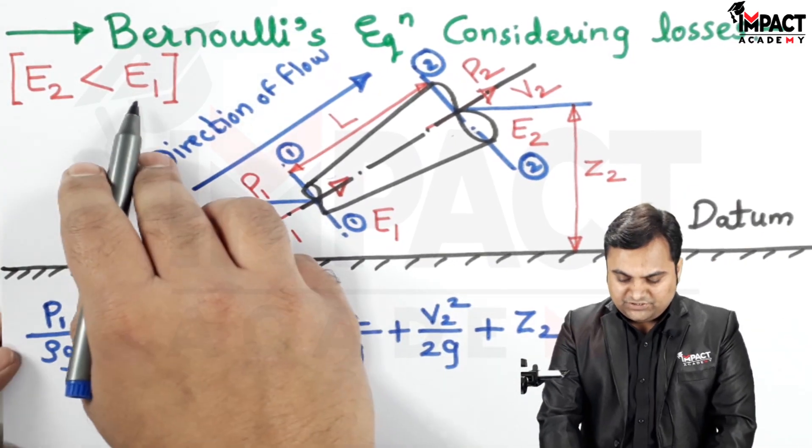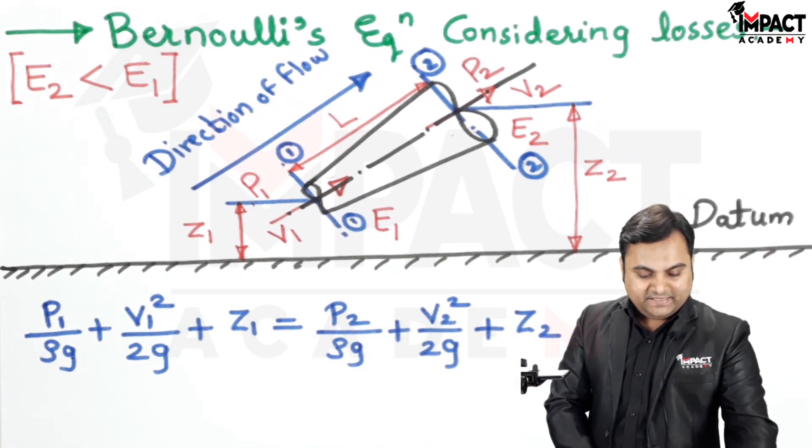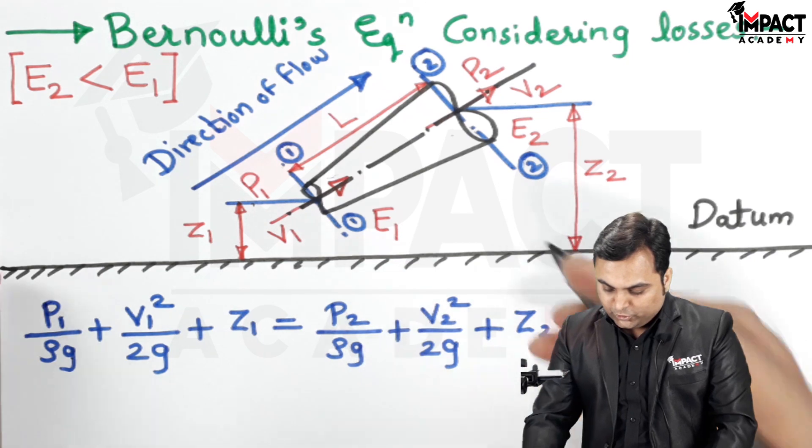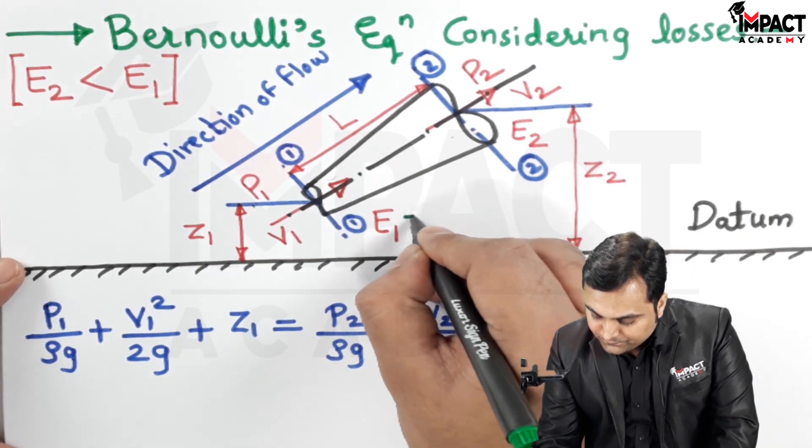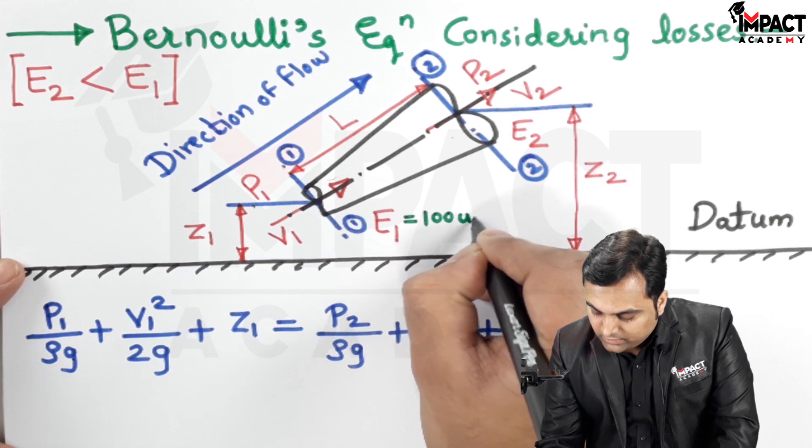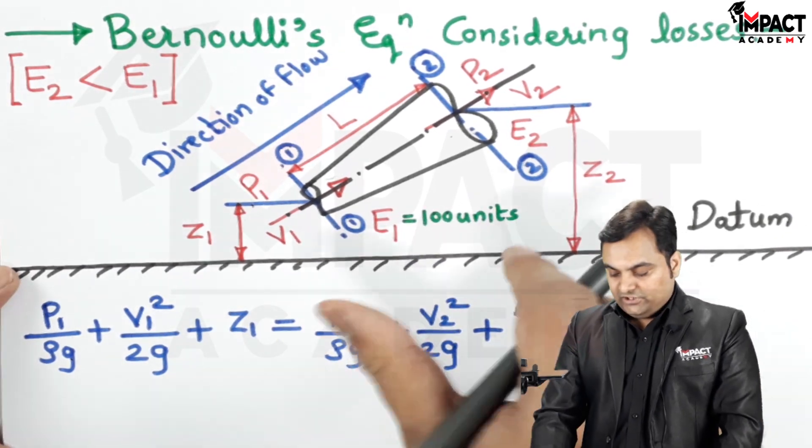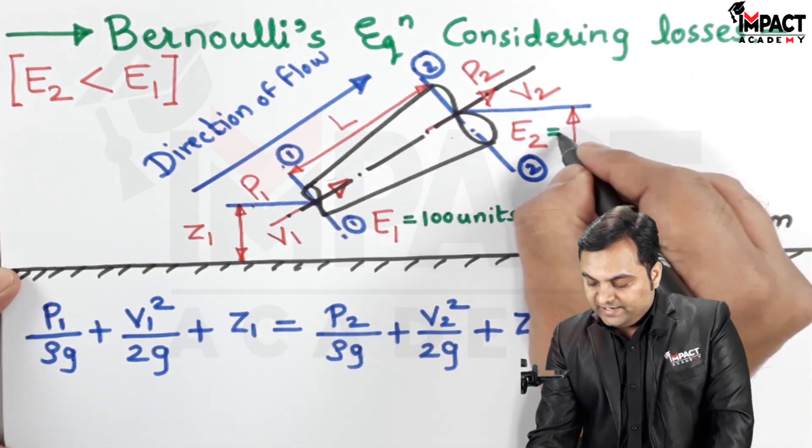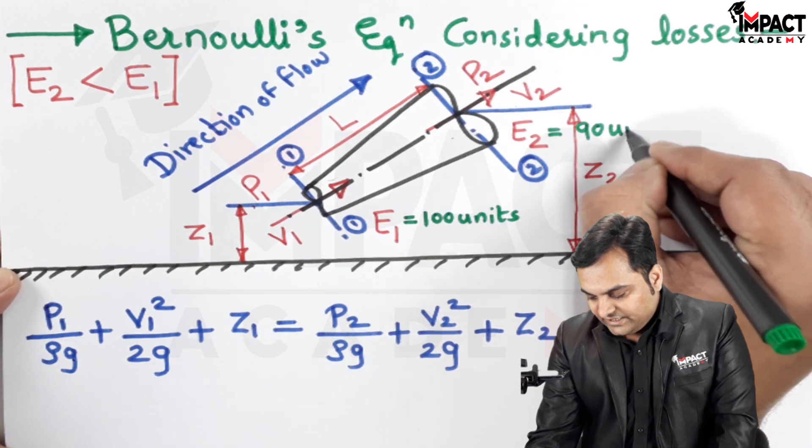Since the energy at section 1 is greater, I am just taking an example in order to explain it to you all. Like suppose E1 is 100 units of energy. At E2, the value reduces, so E2 suppose it is 90 units.